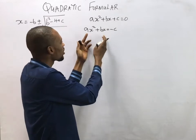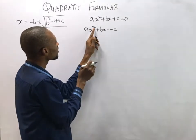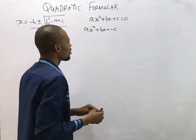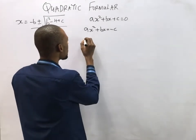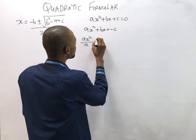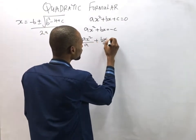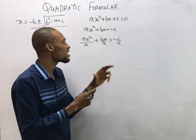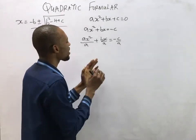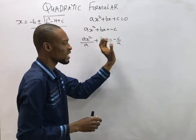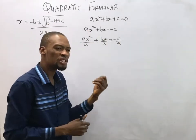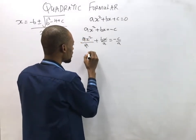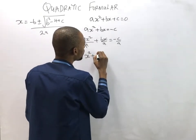Now we want x² to stay alone with a coefficient of one. To do that, we divide every term by a — dividing here by a, and here by a, and here by a. The reason we divide every part by a is that in mathematics, anything that happens to one term should happen to all terms. This is what keeps the equation balanced. So a over a leaves us with x², giving us x² plus bx over a equals negative c over a.